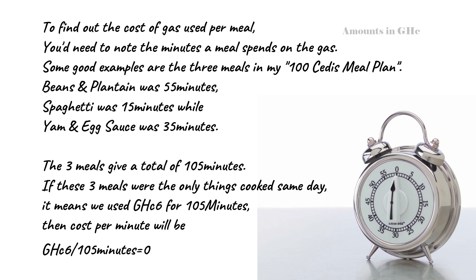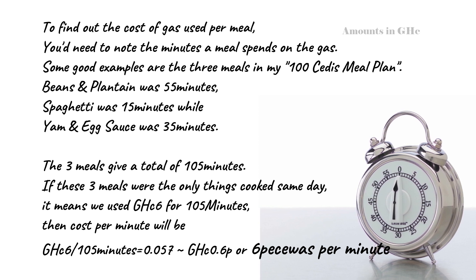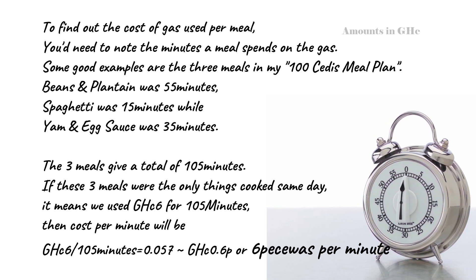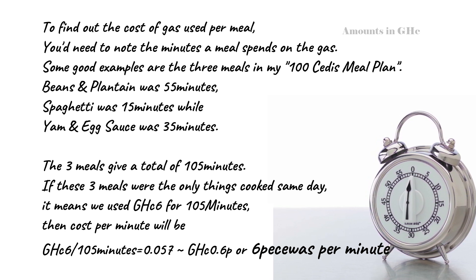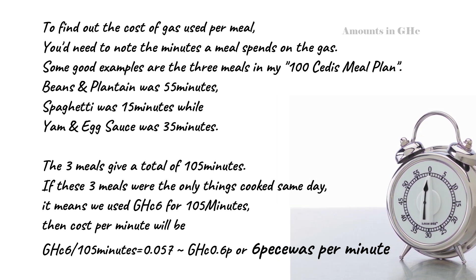So 6 cedis divided by 105 minutes — the goal here is to know how much out of the 6 cedis I'm spending per minute, so I can calculate each and every meal. 6 cedis divided by 105 minutes gave me 0.057, which we round up to 0.06 cedis per minute. So to get how much out of the 6 cedis I spent on beans and plantain, all I have to do is 0.06 times 55 minutes.